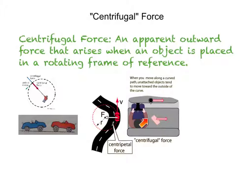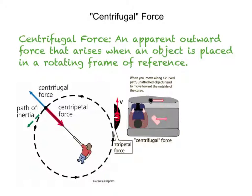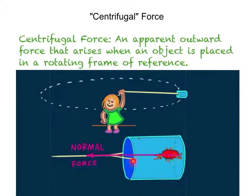So likewise, when you swing like maybe a tin can in a circular path, no force pulls the can outward. The only force acting on it is the string pulling it inward. There is no outward force on the can. Now, suppose there's a ladybug inside the can whirling around.